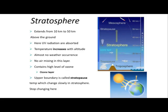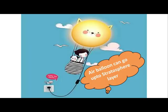Let's go to the stratosphere. This is the next layer after the troposphere. UV radiation is absorbed at this level. The temperature increases with altitude, and there is no weather occurrence at this part — no air mixing either. It contains a high level of ozone, which protects us from ultraviolet rays from the Sun. The upper boundary is called the stratopause. Air balloons can go up to the stratosphere layer.